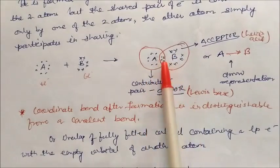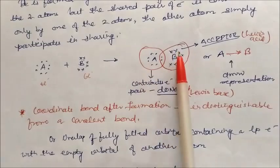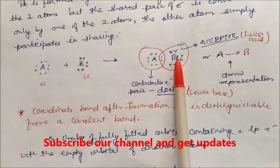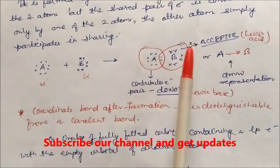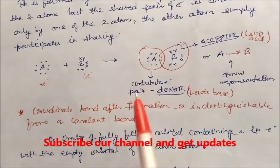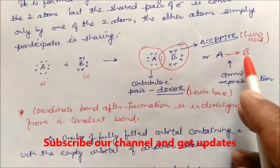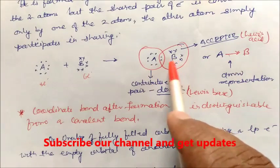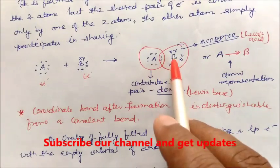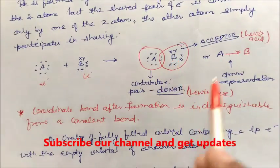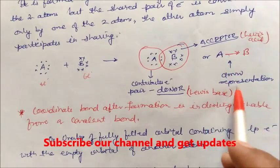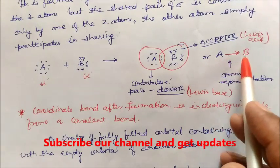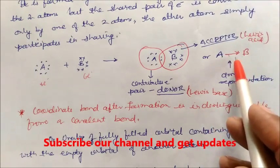In other terms, we say A is the Lewis base and B is the Lewis acid. This sharing is represented by an arrow from A to B, because A is donating an electron pair to B. So we represent it as an arrow: A giving electron pair to B.